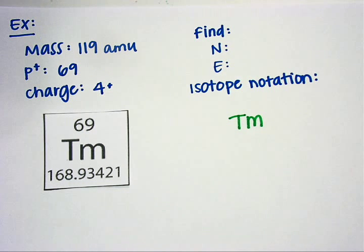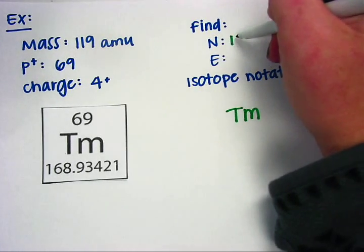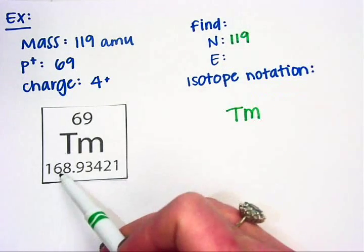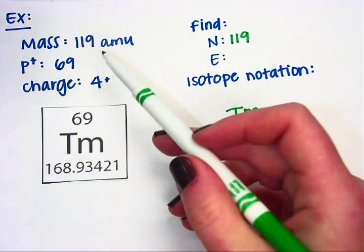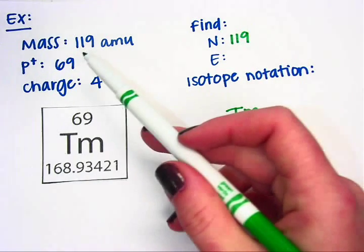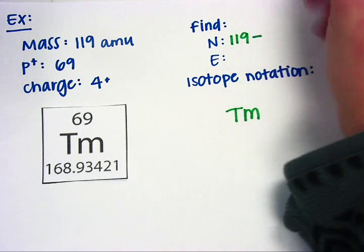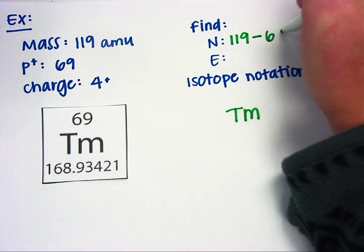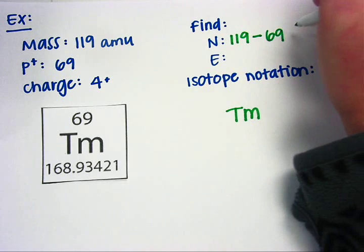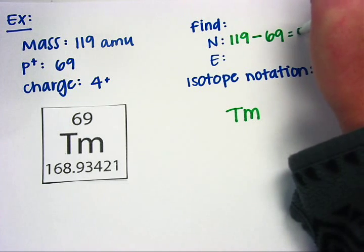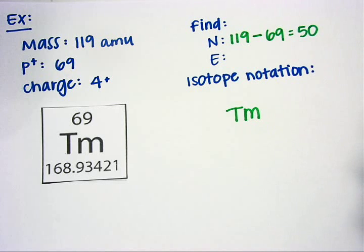Next I can find the number of neutrons. Neutrons is the mass, and it's not the mass from the periodic table. It's the mass from the problem, since it's an isotope. 119 is what I'll use. Then I'm going to subtract the number of protons, 69. 119 minus 69 gives me 50 neutrons.